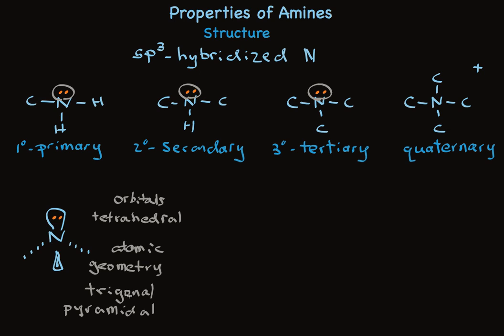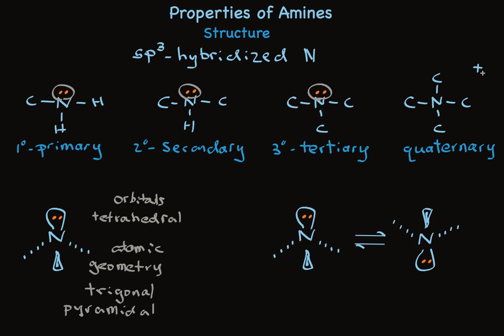However, this typically does not persist, because if one of the orbitals is occupied by a pair of electrons, that nitrogen rapidly inverts. So you may have a chiral center R on the left side, which will be S on the right side. Generally, they're in very rapid equilibrium. Also note that a quaternary ammonium salt has a positive charge and will need to have some kind of an anion associated with it.